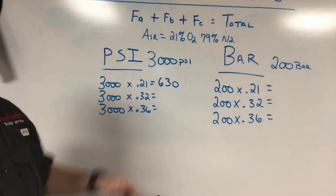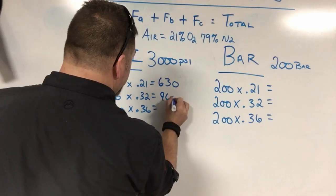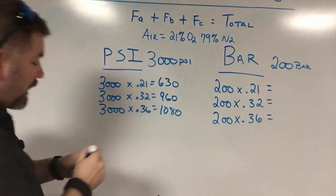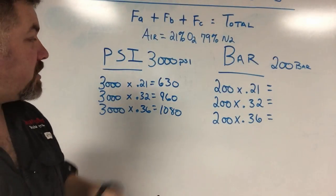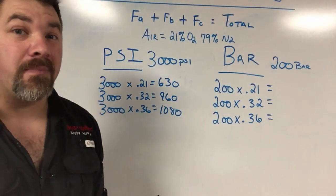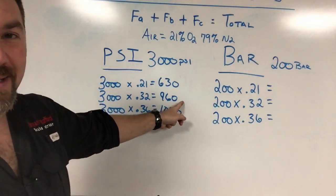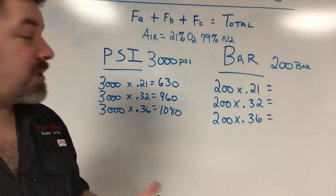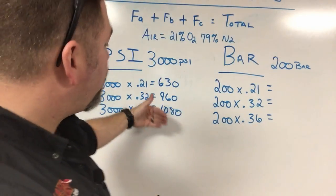I'll write these up for you. In a 3,000 PSI cylinder, 21% oxygen equals 630 PSI, in a 32% blend it's 960 PSI, and in a 36% blend it's 1,080 PSI. Very simple—just type it into the calculator.